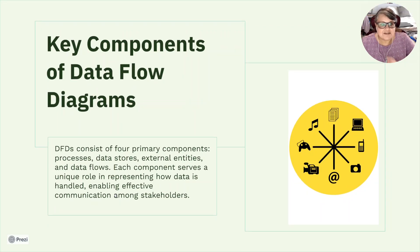The key components of data flow diagrams. Data flow diagrams consist of four primary components. Processes, that was what we said was a transcript system. Data stores, that was off to the side. External entities and data flows. Each component serves a unique role in representing how data is handled, enabling effective communication among stakeholders. So all of those four entities, you could represent them in UML. We're going to go over UML in our diagrams with this. UML is unified modeling language.